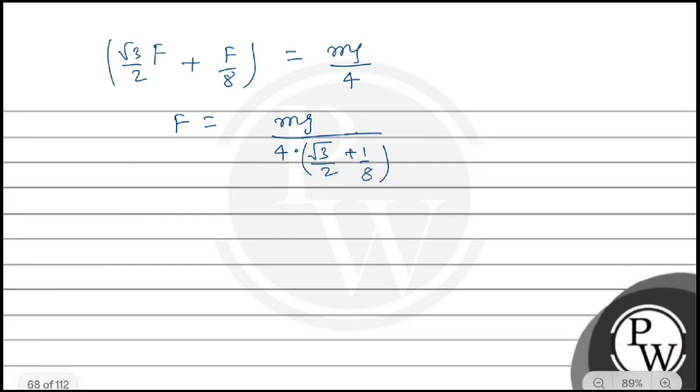Now solving further, mass is given as 10 kg and g is 10, so 2 cancels out. We get 2 × (√3 value is 1.73) plus 1/4, which is 0.25.